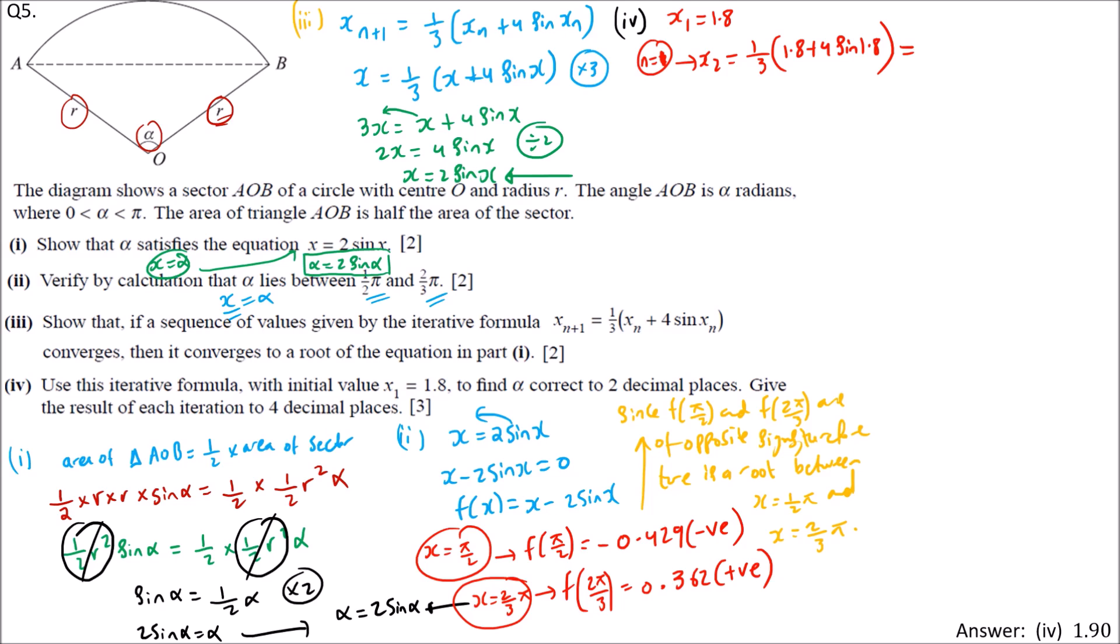So x_2 equals 1/3 times (0.8 plus 4 sin 0.8). To 4dp: 1/3 times 0.8 plus 4 times sin 0.8 gives x_2 equals 0.8905.